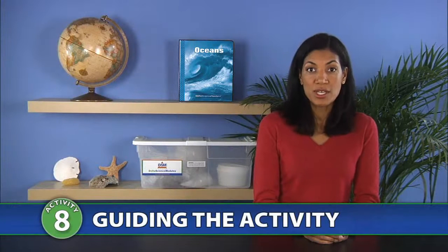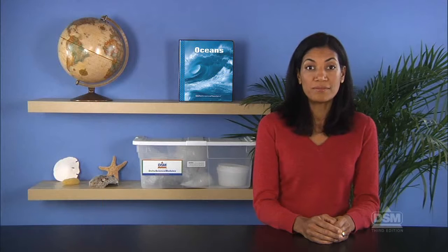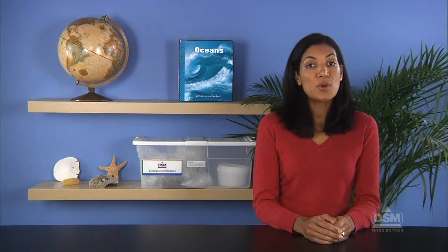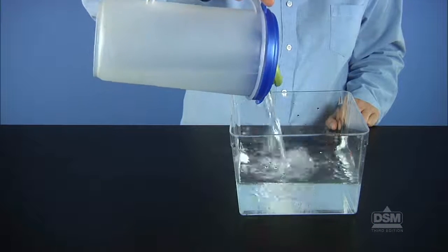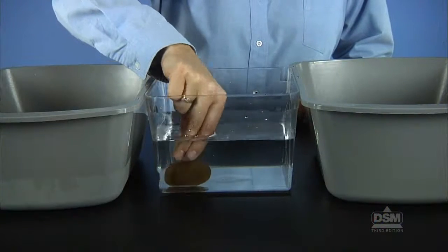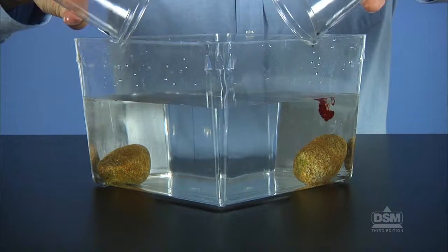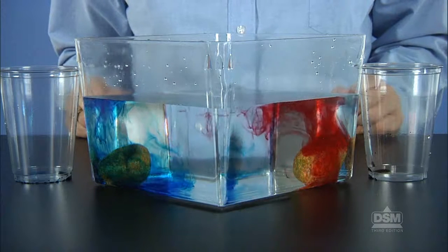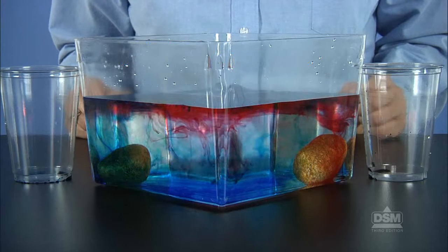To begin Session 2, distribute a copy of Activity Sheet 8, Part B to each student. Then divide the class into teams of four and distribute the materials to each team. To represent the ocean, fill each team's container about three-quarters full with room temperature tap water. Distribute the two food coloring samples to each team. Instruct students to take one rock from each of the buckets and place the rocks in opposite corners of their plastic container. Have students pour the red food coloring into the water directly over the hot rock and the blue food coloring into the water over the cold rock. Then tell students to record their observations on their activity sheets. Encourage students to work quickly because the rocks will change temperature quickly as soon as they are placed in water.